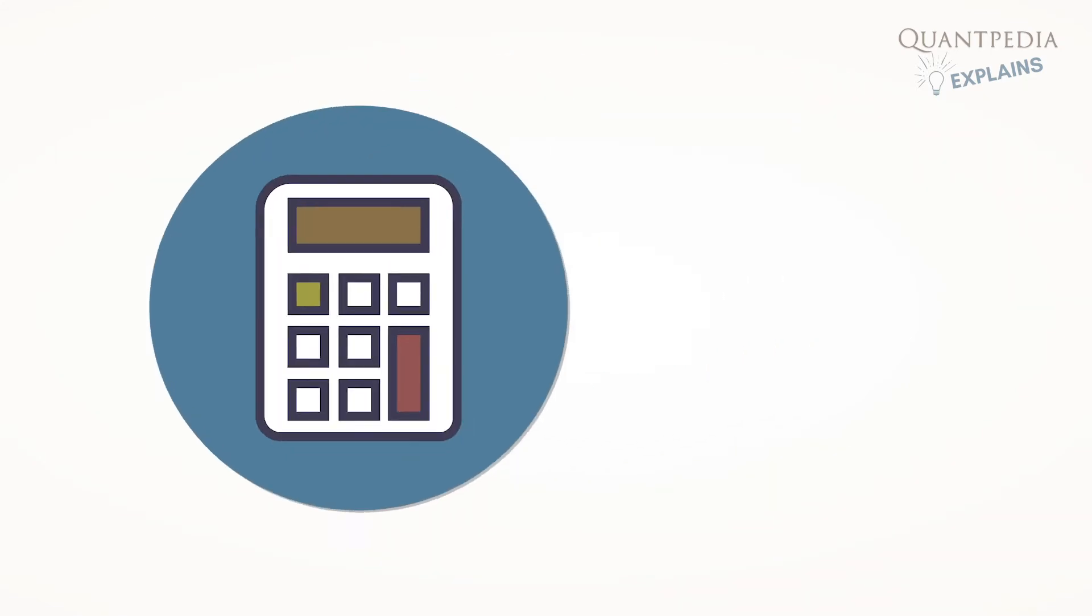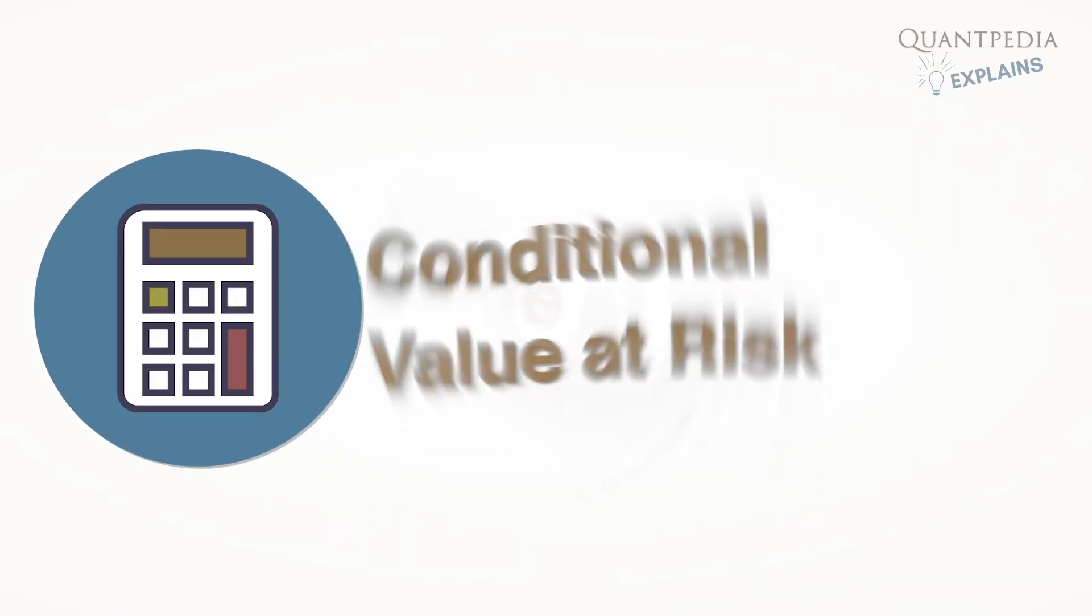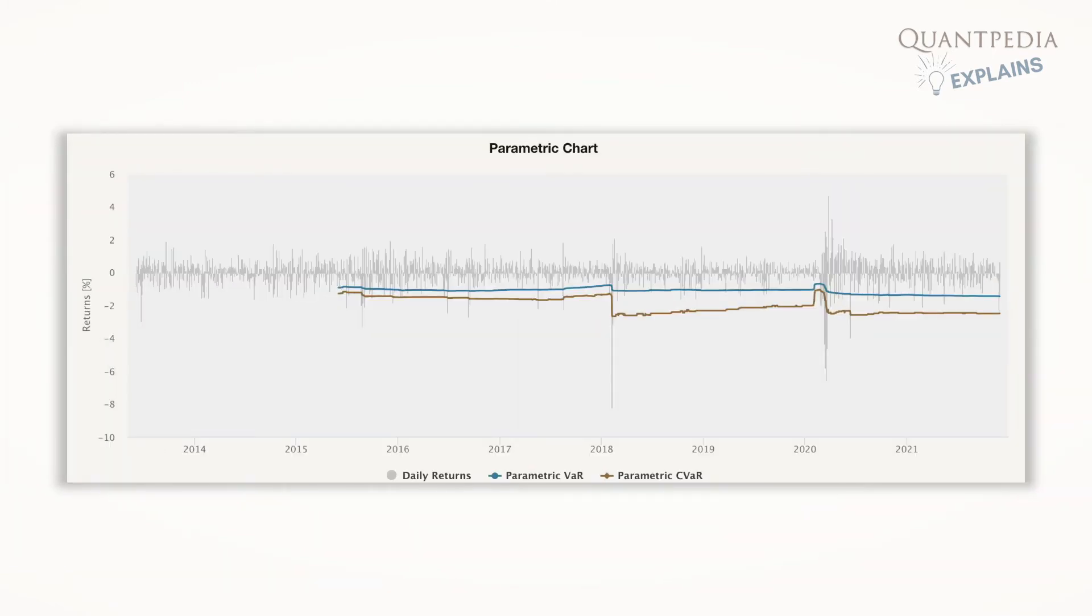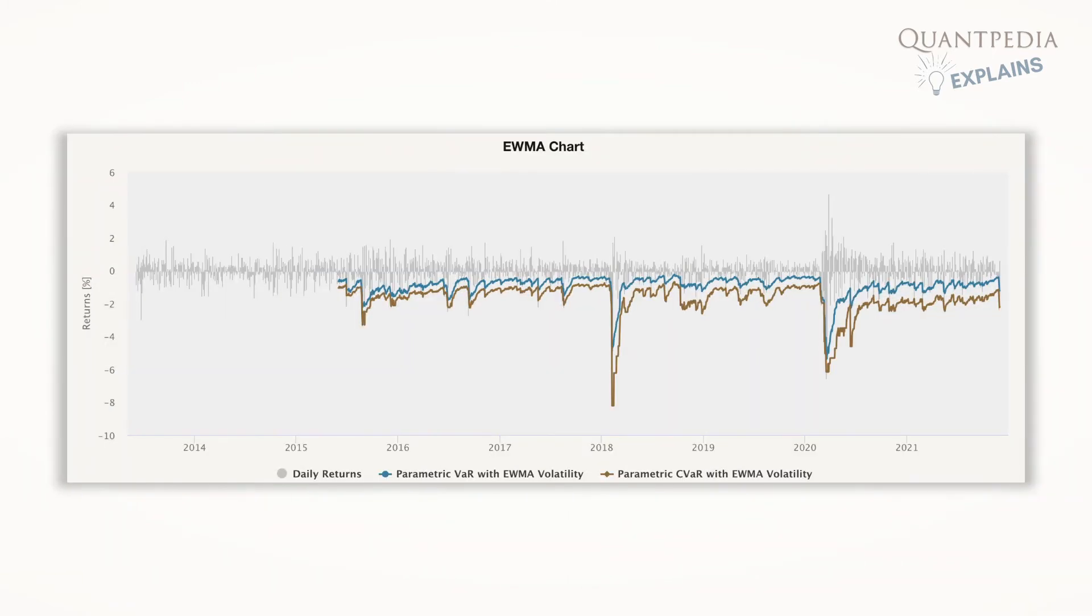Our report calculates Value at Risk or VAR and Conditional Value at Risk or CVAR based on historical simulation, parametric method assuming normal distribution, and parametric method combined with EWMA model for volatility.